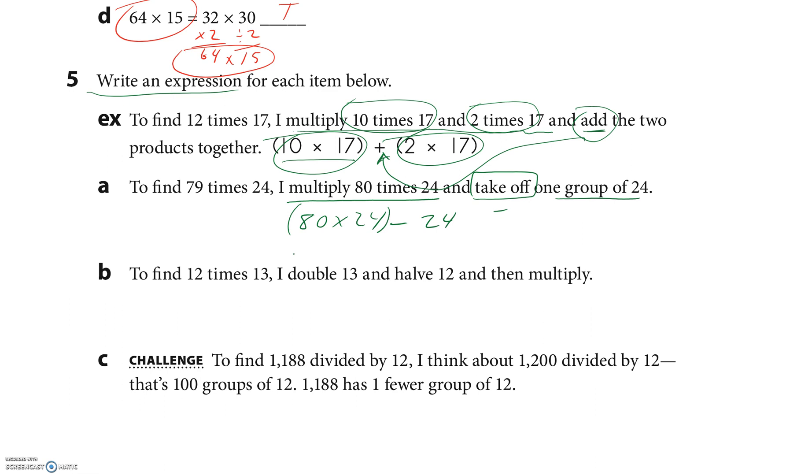Let me see B right here: 12 times 13. I double 13 and half 12. Double means times 2, half means divided by 2. So 13 times 2, some of you want to write 13 times 2, and then you're gonna multiply those, and you're going to write 12 divided by 2, and then you're gonna multiply those. Some of you want to go further: 26 times 6. You could even go further than that, but they just want an expression.